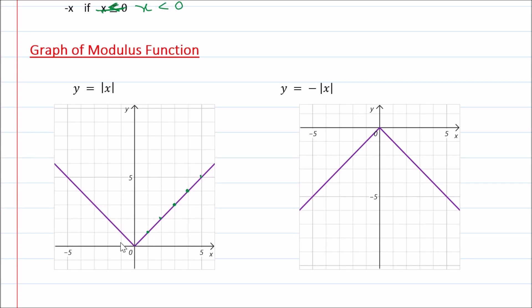If you take negative values of x, as you know, Mod of minus 1 will be positive 1. So if x equals minus 1, y equals 1. If x equals minus 2, y equals positive 2. Once you join them, we get a V-shaped graph. Now, for minus Mod of x, it is being reflected in the x-axis, so we get an inverted V-shaped graph.